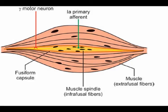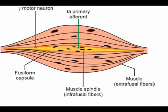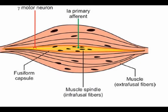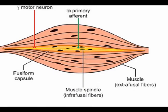A muscle spindle is a bundle of striated intrafusal muscle fibers within the fascicles of force-producing extrafusal muscle fibers. Fusal comes from the term fusiform, meaning spindle-shaped.